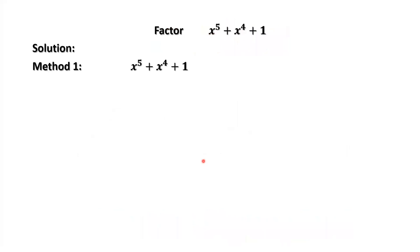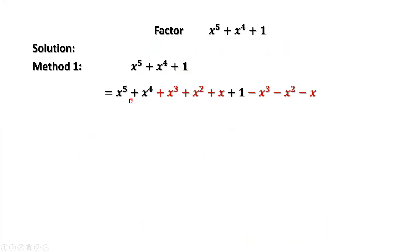Method 1: the grouping method. x to the power of 5 plus x to the power of 4 plus 1 equals x to the power of 5 plus x to the power of 4 plus x to the power of 3 plus x squared plus x plus 1. Now you can see these three terms are extra — originally we don't have them. So here we have to subtract them to make them equal.